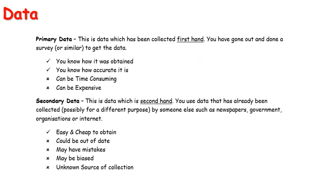Under data we also have what's known as primary data and secondary data. You would have seen something like this in other subjects like history. Primary data is something you collect first hand, while secondary data is where you get it from a source like Google or a book — somebody has already done the work; it is second hand.